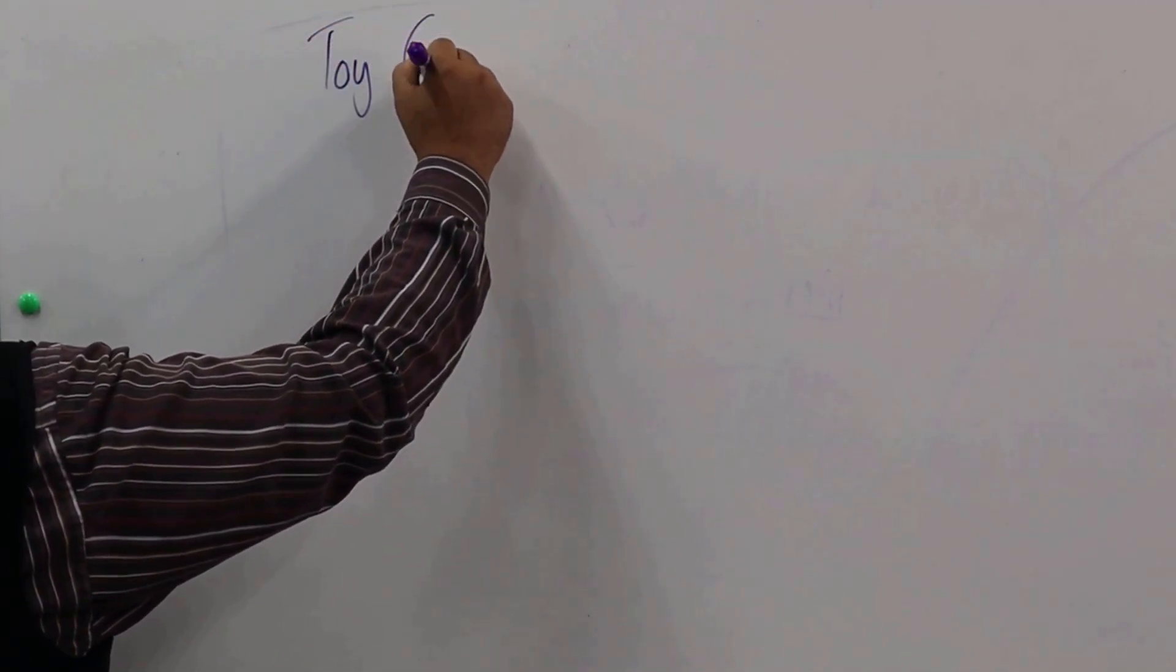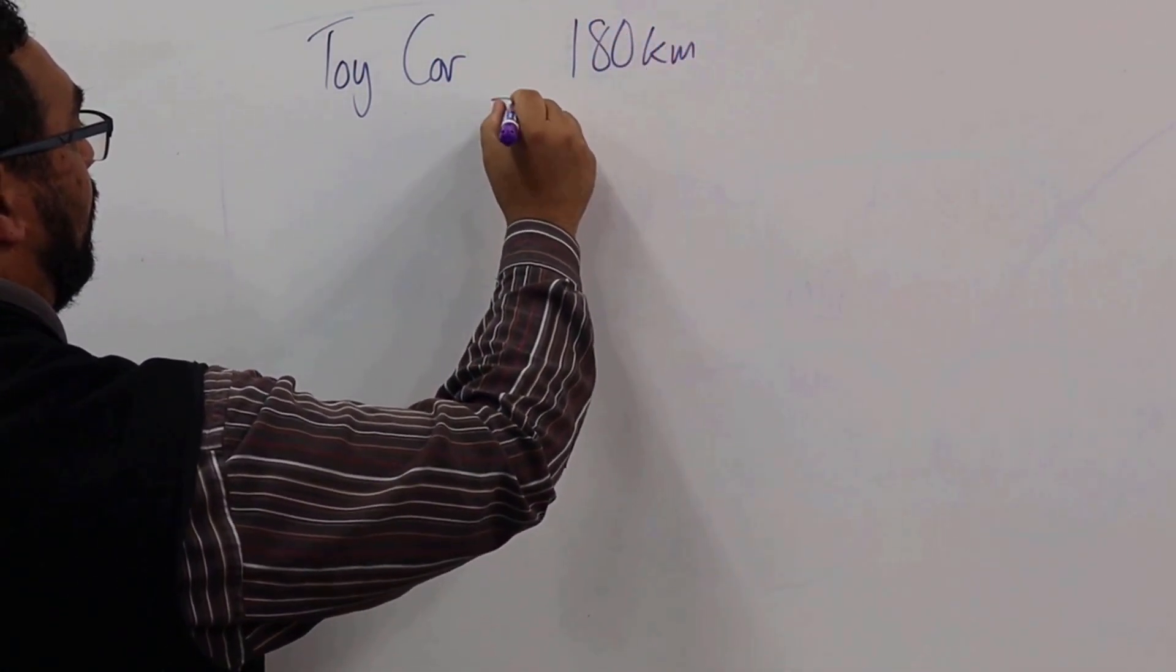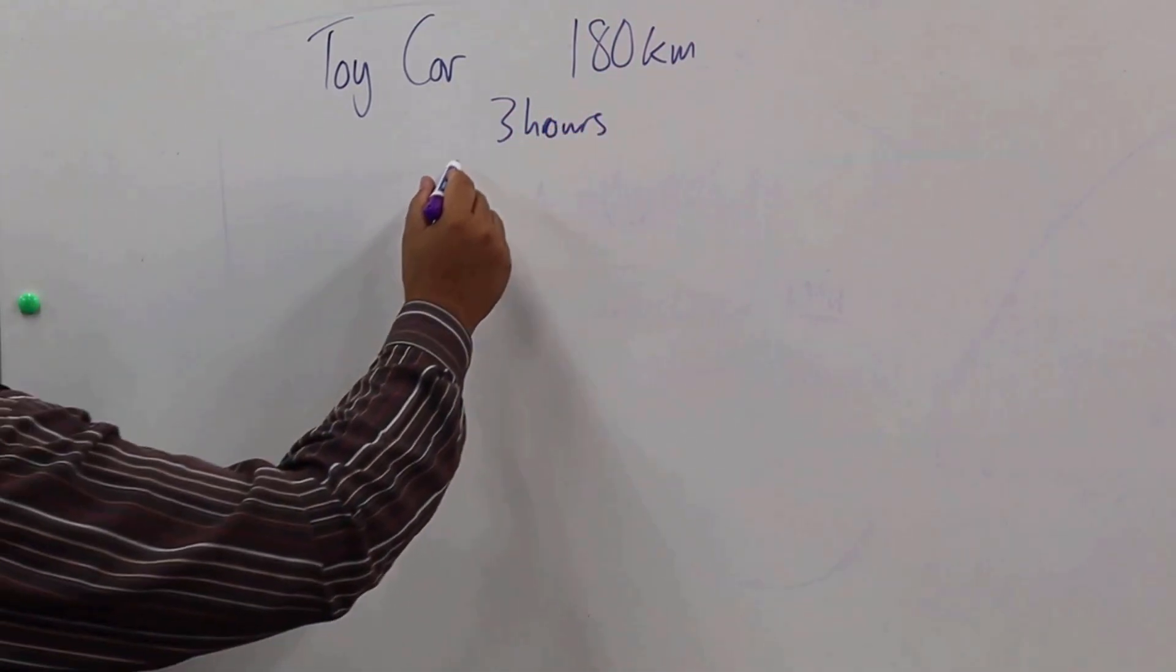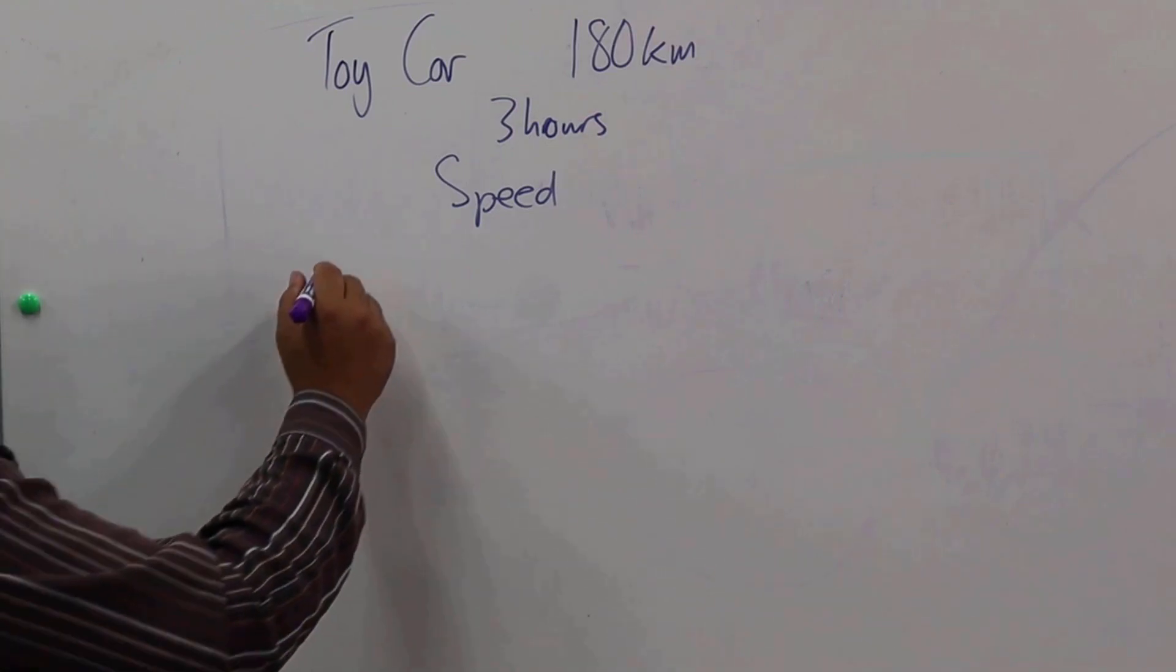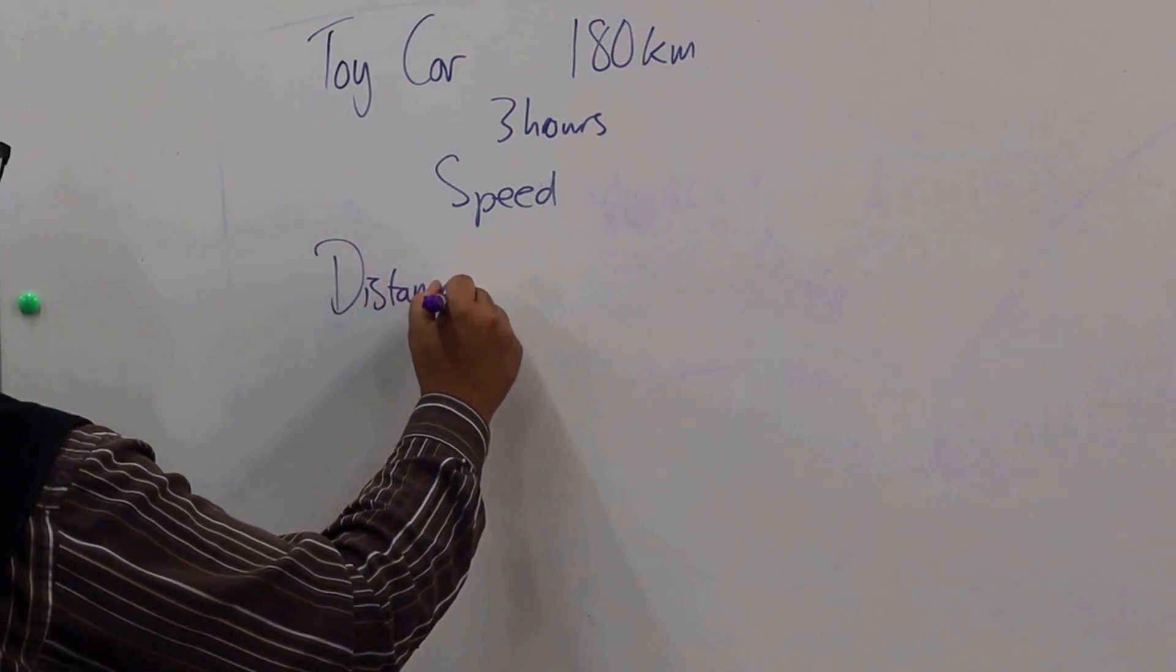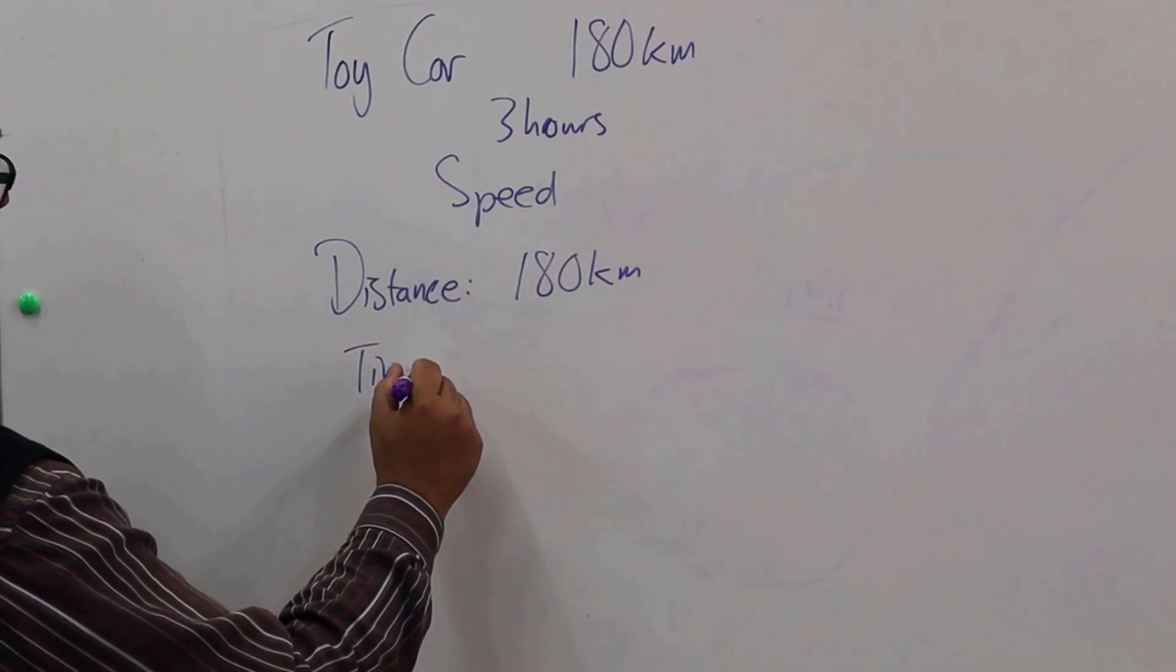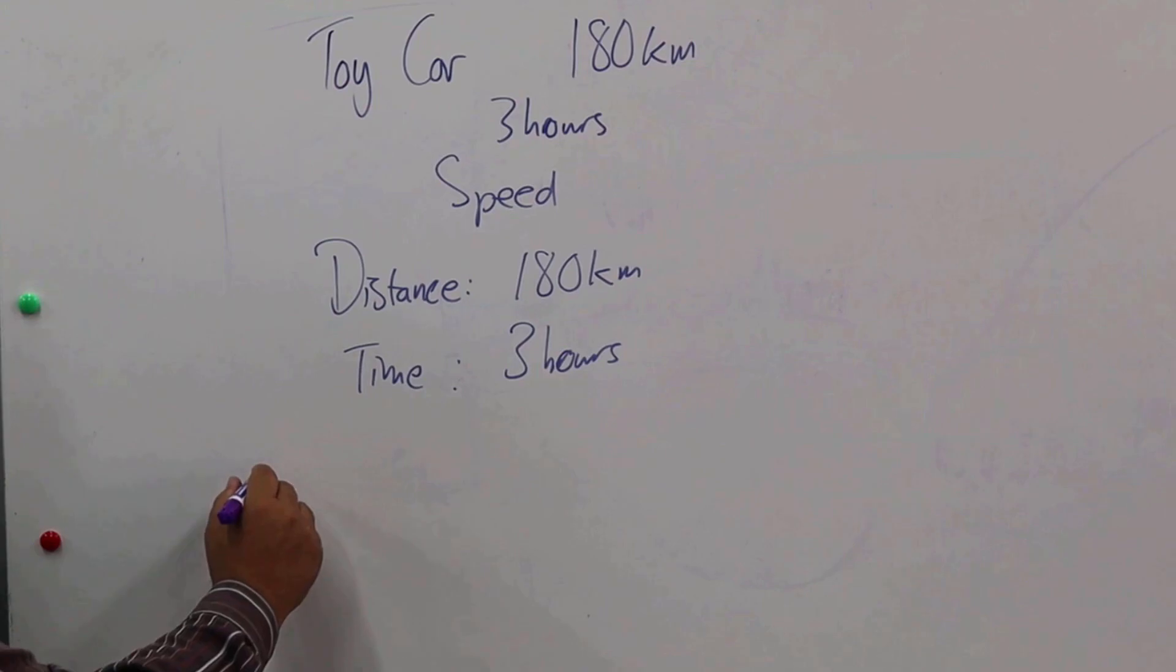In our second example, let's level it up a little bit. Let's say that I have a toy car, and this toy car travels 180 kilometers for three hours, and they want to know what is the speed at which it is traveling. So again, we're going to use the same method. Let's identify the quantities. What do we have? We've got distance. What is the distance? 180 kilometers. What else do I have? I've got time. How much time? Three hours. What am I going to do? I'm going to bring in my rate.